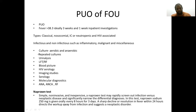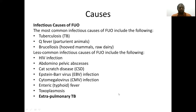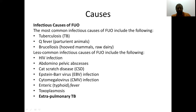We give naproxen orally over 8 hours for 3 days. If the fever is alleviated and responding to naproxen, it is more likely towards a neoplastic disorder. The most common infectious causes of pyrexia of unknown origin are tuberculosis, then Q fever, Coxiella burnetii, or brucellosis. Less common include HIV, abdominopelvic abscess, cat-scratch disease, EBV infection, cytomegalovirus, typhoid, toxoplasmosis, or extra-pulmonary TB.